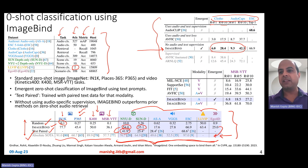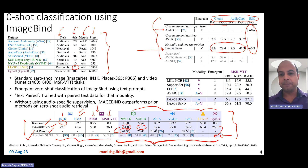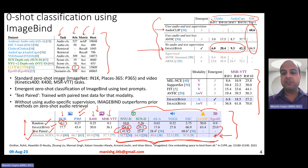For audio classification, ImageBind's results are very comparable to AudioCLIP, which is a supervised method. On MSR-VTT, especially with audio and video modality together, ImageBind gives state-of-the-art results, and even with just audio alone it gives reasonably good results.